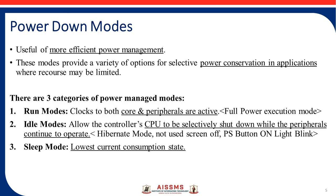The next mode is idle mode. In idle mode, the microcontroller CPU is selectively shut down while the peripherals continue to operate. For example, in your laptop there is a hibernate option — the system is switched off but other peripherals continue to work. Also, if you don't use your system for some time, your monitor screen turns off but in the background peripherals continue to work. Similarly, your main power supply button may be on but your computer is shut down — a green light keeps blinking, meaning your CPU is shut down but peripherals are still on. These are the different examples of idle mode.